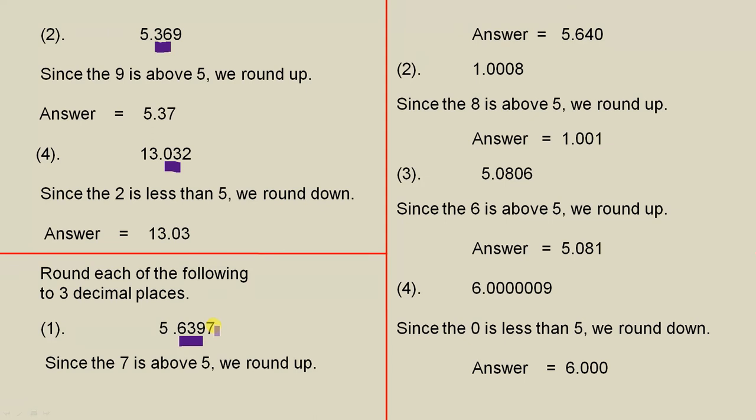This 7 is above 5, so we round up. Now this is an interesting one. Because that's a 9, the only way we can round up is if we make this 3.9 a 4.0, because we have to add 1 to this. And if you add 1 to 39 or to 3.9, you get 4.0.